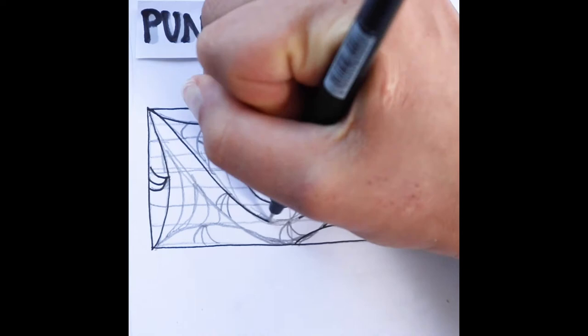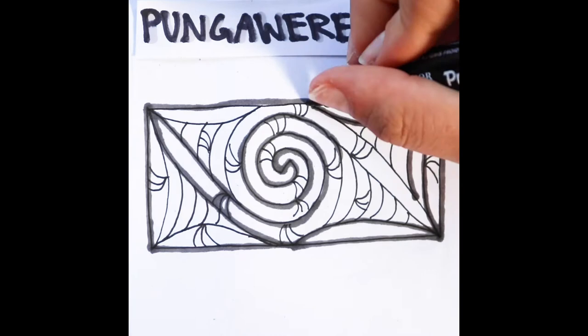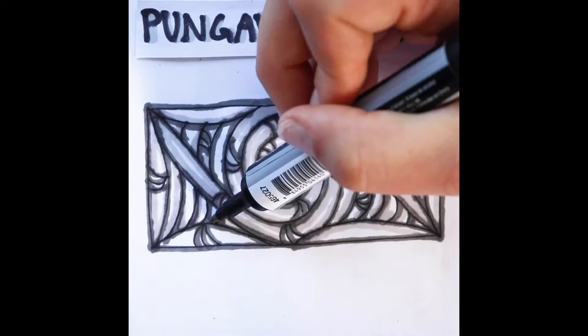The word punga uere uere translates to spider, so this pattern represents spider webs. It symbolises whakapapa or genealogy and family values such as maintaining the wellbeing of the whānau and whānau community. And that's a punga uere uere.